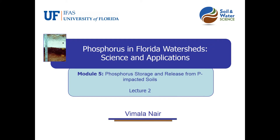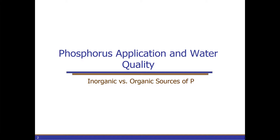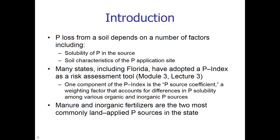In this lecture we look at how different P sources affect P storage and release from impacted soils. When we talk about P release naturally, it means how it's going to impact water quality when it moves from the soil to a nearby water body. P loss from a soil depends on a number of factors, including the solubility of the P source and the site characteristics of the P application site.